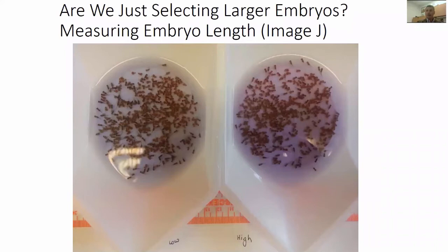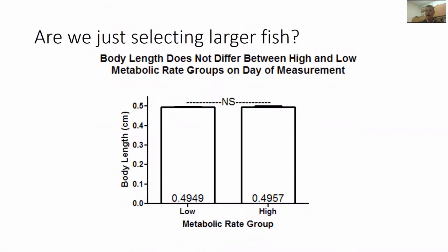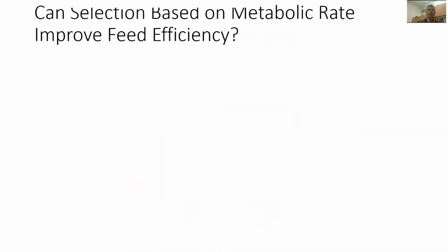When we first presented this data, the question was asked: are we just selecting the bigger fish at that point? We took pictures of low and high metabolic rate fish, blew them up, and measured body length of individual fish. We found no difference in body length associated with these fish — so we don't think we're selecting bigger fish. We're selecting fish that are more metabolically active.